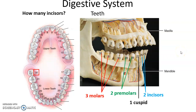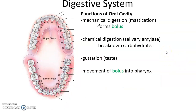However, if you had your wisdom teeth removed — that would be the last of the molars — in that case you would have only eight molars. The oral cavity is where we start mechanical digestion, called mastication: chewing up the food and mixing it with saliva. This moist mass is referred to as the bolus. Chemical digestion also occurs via salivary amylase, breaking down carbohydrates. And then gustation — the sense of taste — and the movement of the bolus into the pharynx.